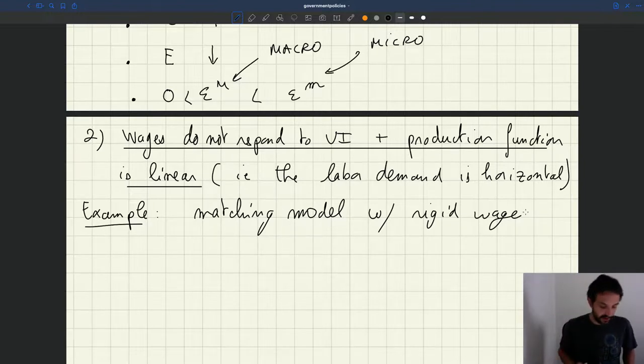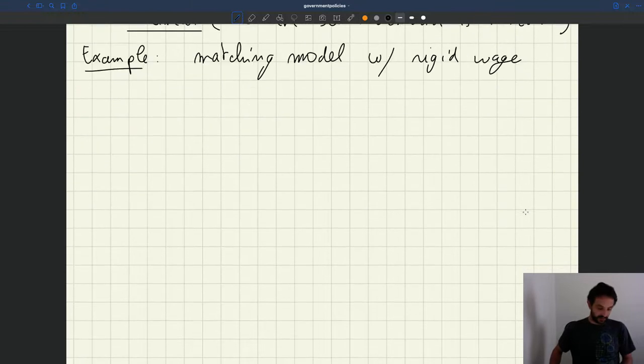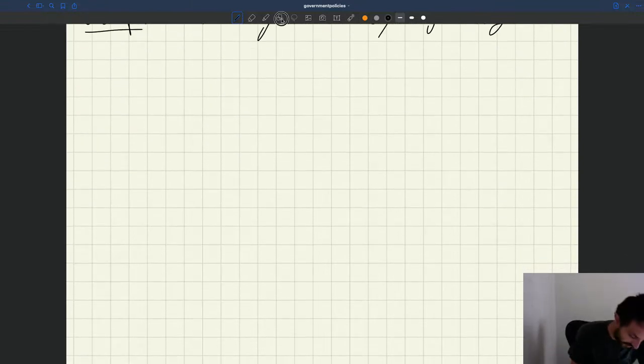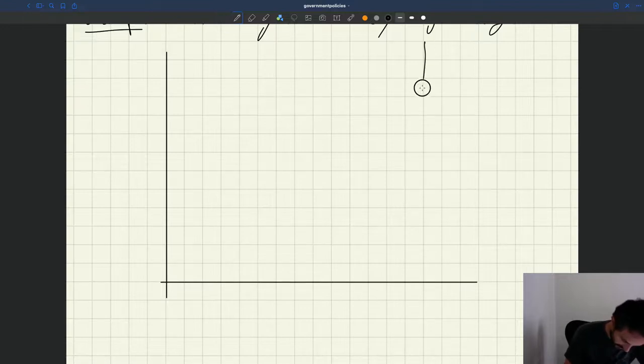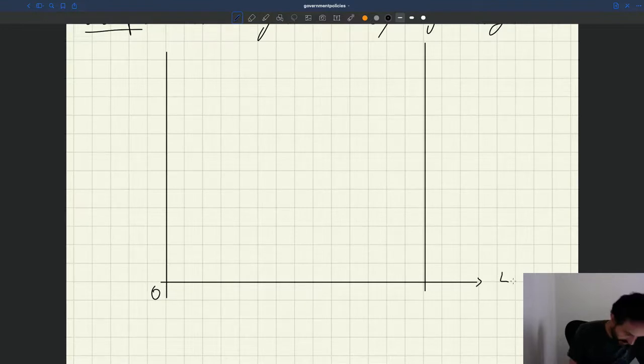Yes, that would be an example here. So what happened? What's going to be different here? So let's plot our labor market diagram. So here we have zero. Here we have employment, tightness, labor force is one.